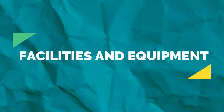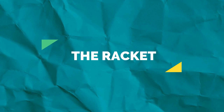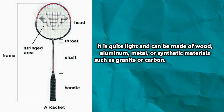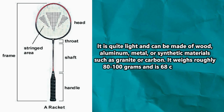Facilities and equipment. The racket is quite light and can be made of wood, aluminum, metal, or synthetic materials such as graphite or carbon. It weighs roughly 80 to 100 grams and is 68 centimeters in length.